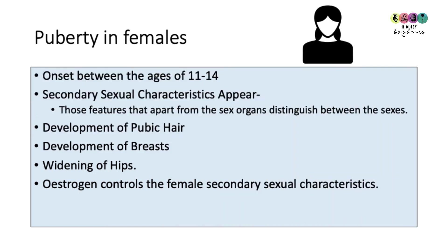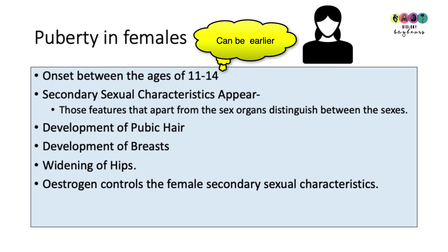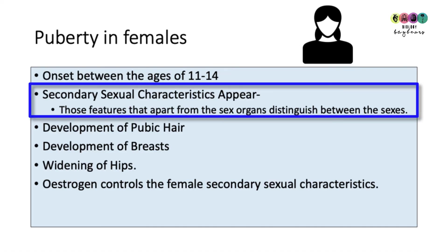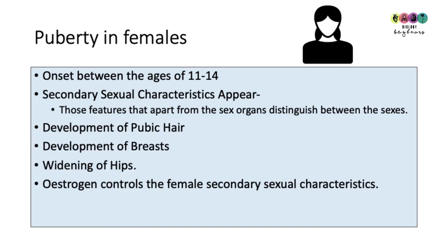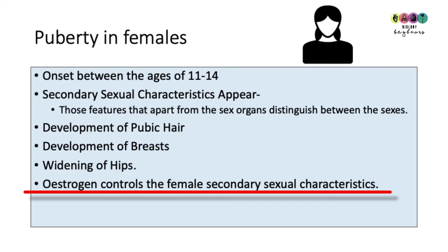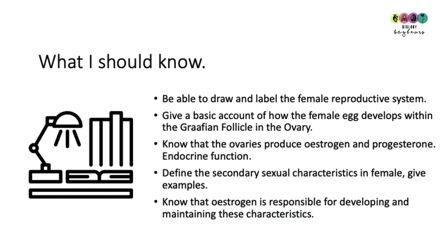Puberty in females begins between the ages of 11 and 14, though it can start younger. At the beginning of puberty, secondary sexual characteristics start to appear. These are defined as features that, apart from the sex organs, distinguish between the sexes — such as the development of pubic hair, development of breasts in females, and widening of hips. Importantly, estrogen is the hormone that controls female secondary sexual characteristics.